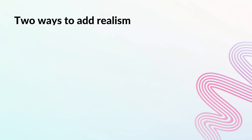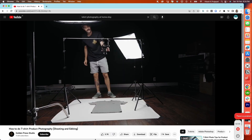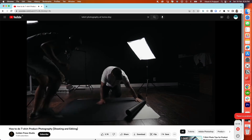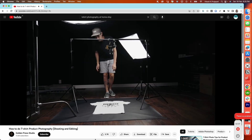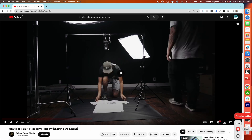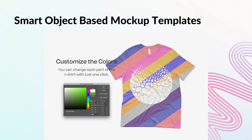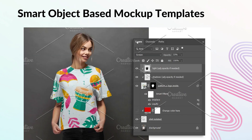To make a detailed and realistic t-shirt image for your listing, there are two methods. Method 1 is to actually print your design on a t-shirt and do a photoshoot — a costly and time-consuming affair, not to mention the ordeal of removing wrinkles and stains for the shoot. Method 2 is to digitally add realism on your mockup image. Adding realism digitally sounds difficult, but it is very simple.